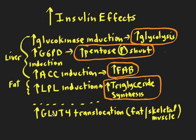There are also effects in fat and skeletal muscle related to the translocation of glucose transporter 4 to the cell surface. When insulin binds its receptors on fat and skeletal muscle, these transporters are inserted into the membrane, helping those cells take up glucose. In skeletal muscle, that glucose can be stored as glycogen for contraction. In fat, the glucose ultimately serves as the sugar backbone to make triglycerides.